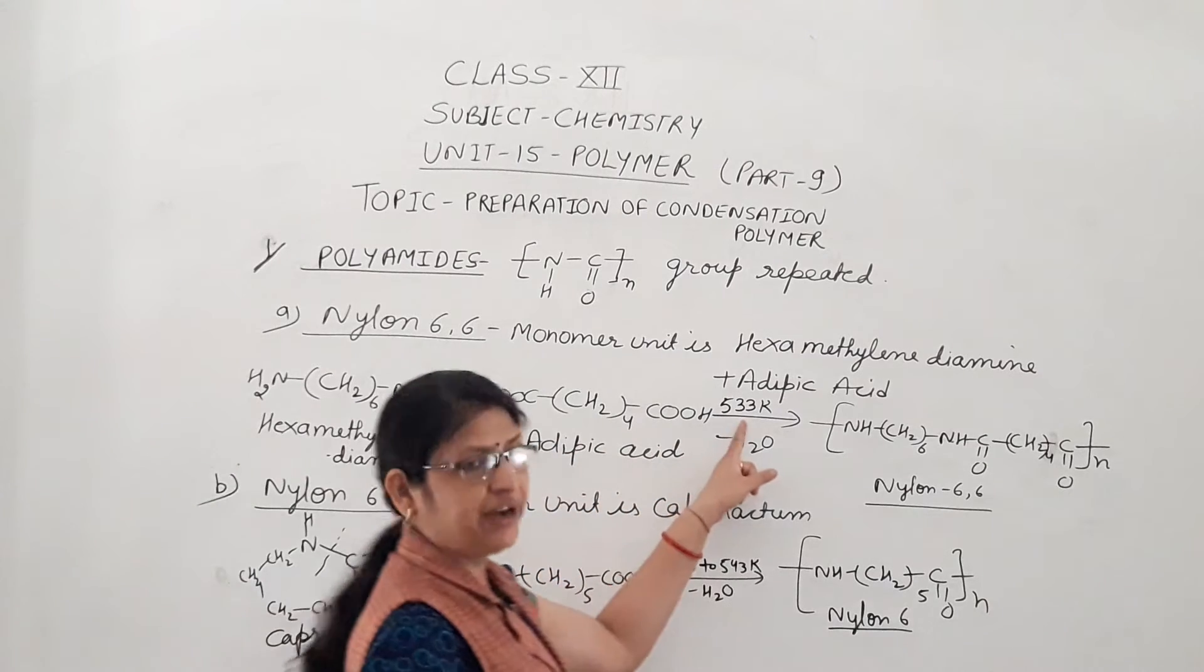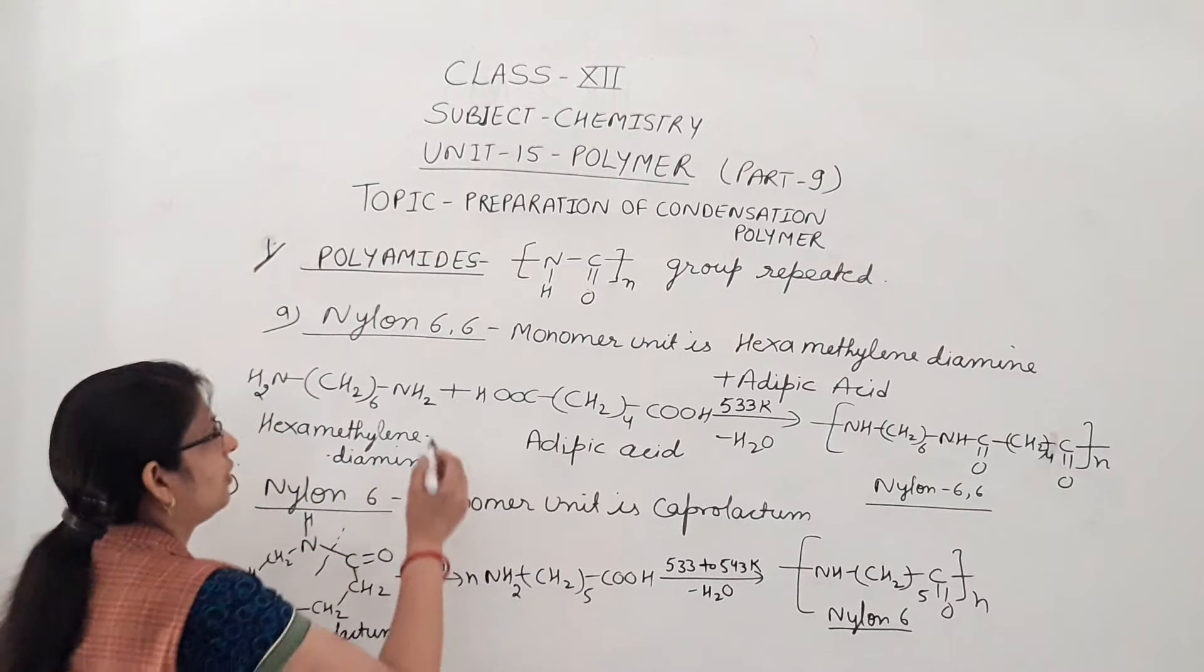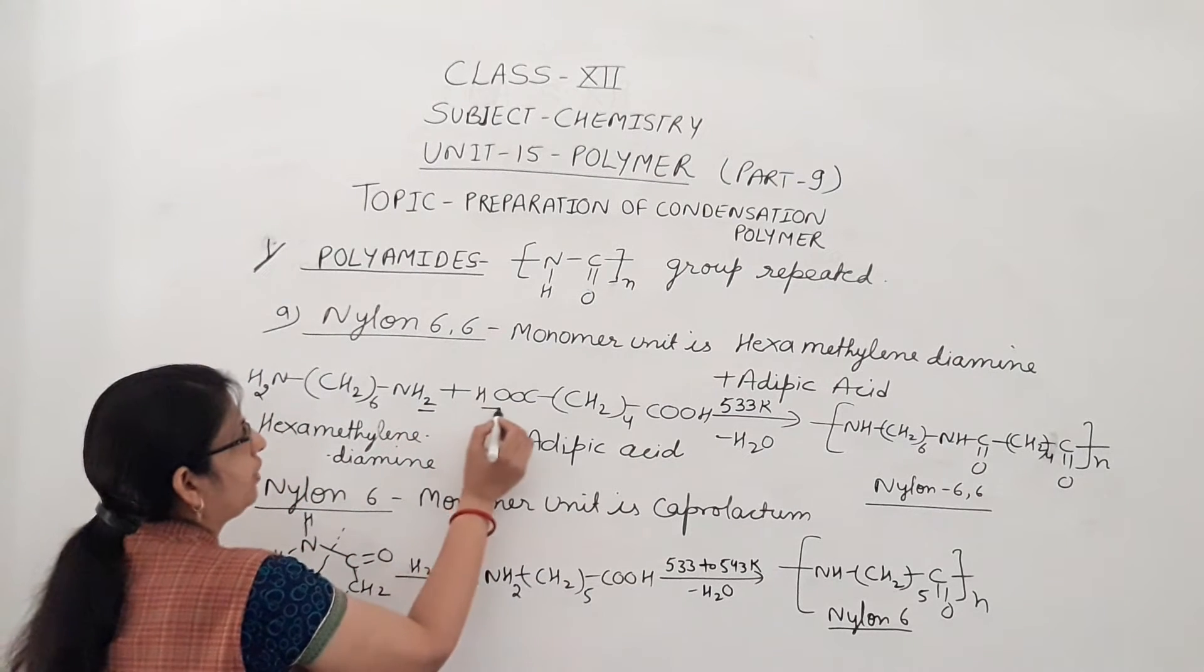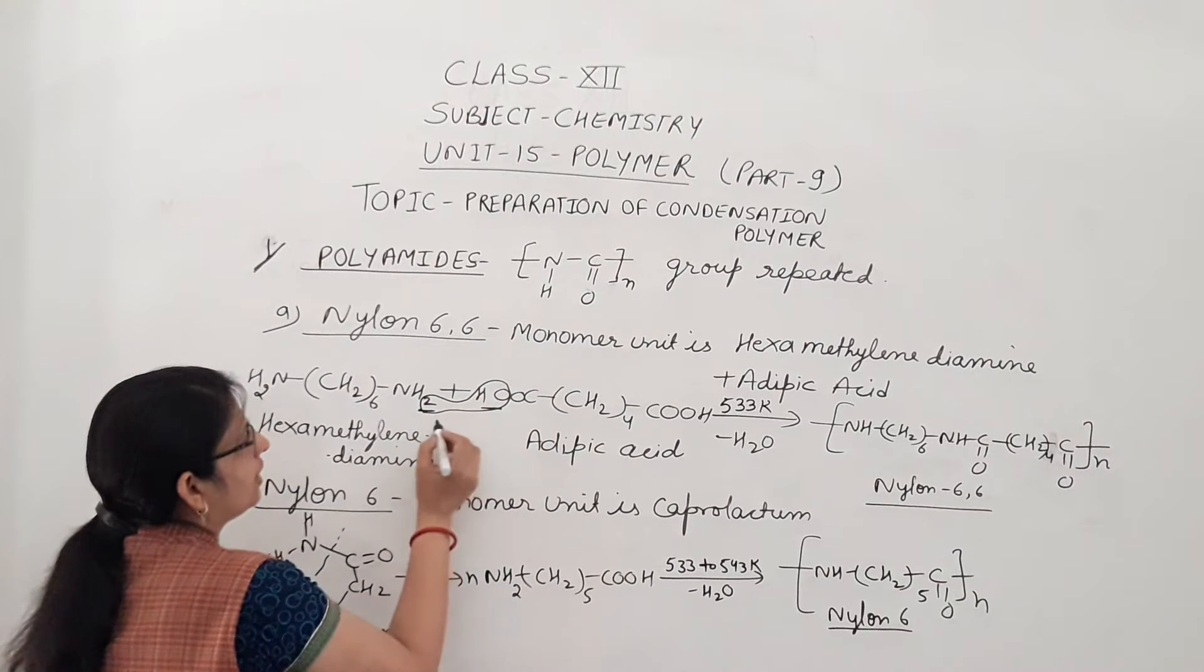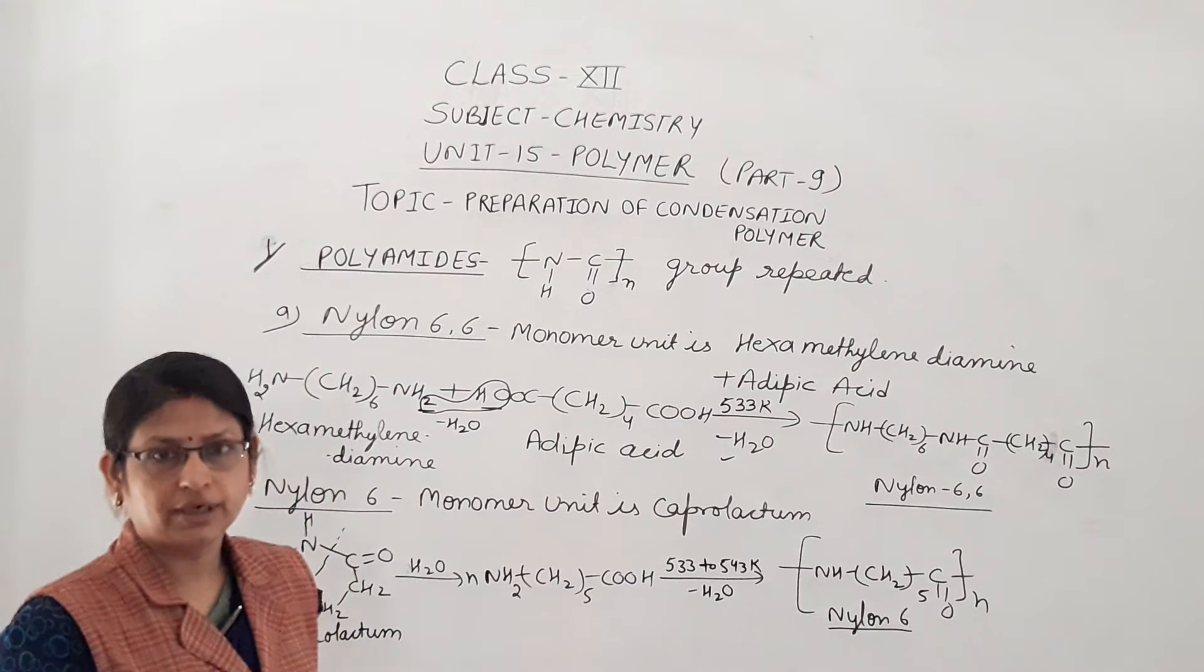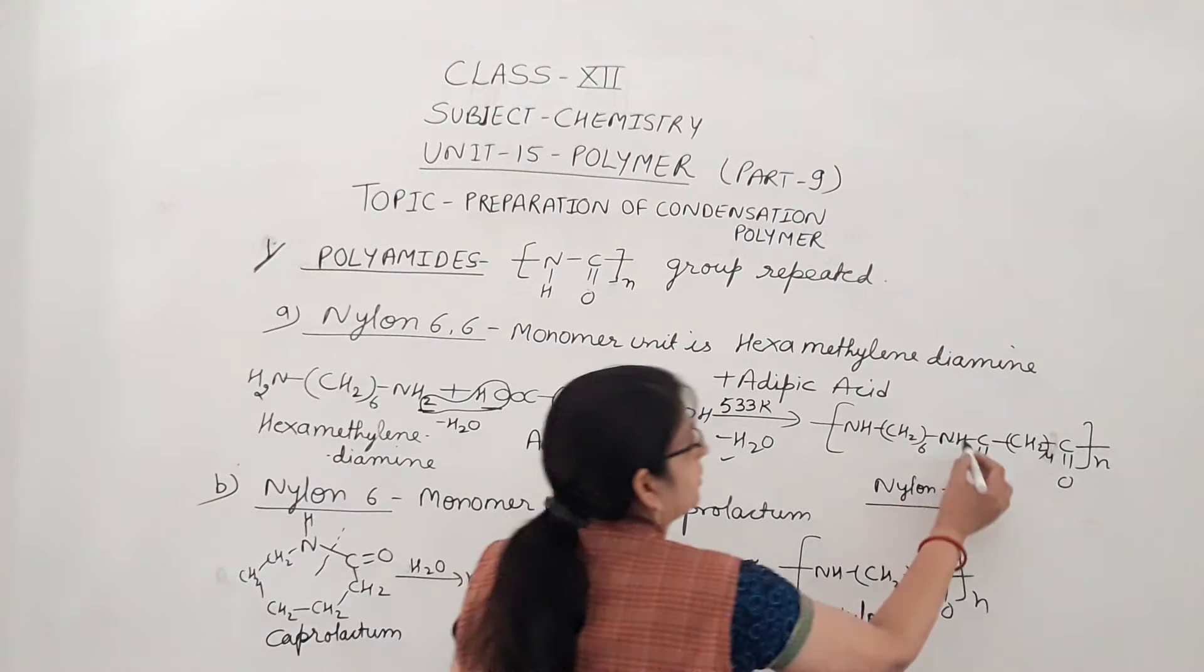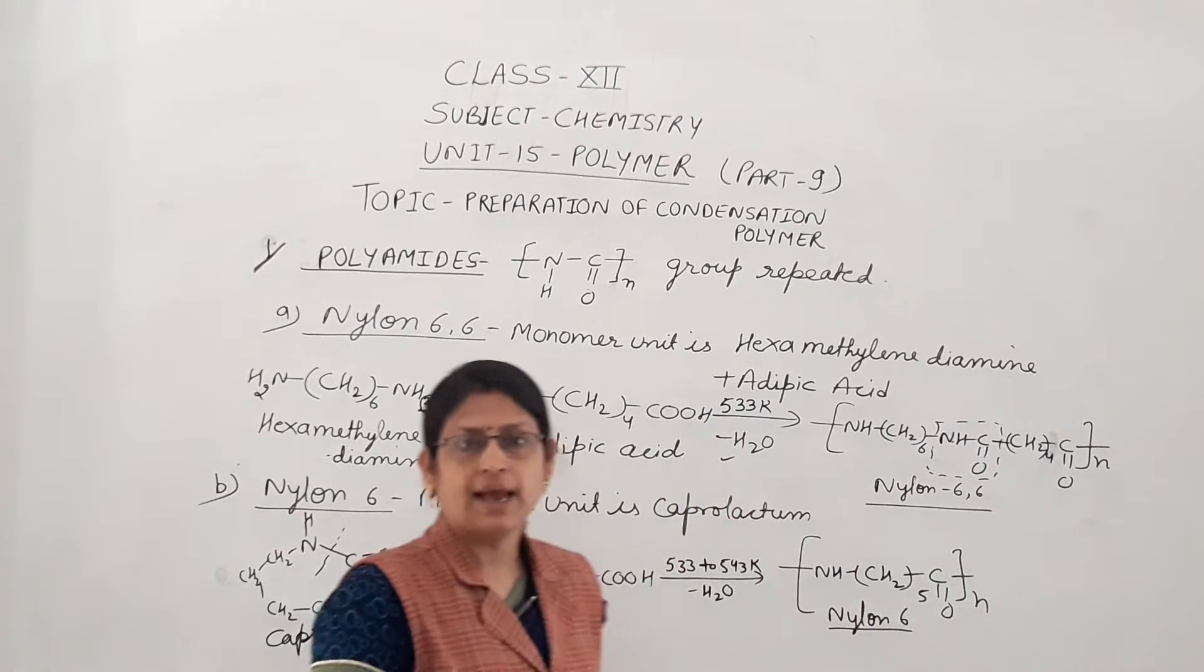So what happened? At 553 Kelvin temperature during polymerization, the water - H and OH - these both combine to each other and water is eliminated. What is eliminated here? Water. So here this group N-H-C=O, that group is known as amido group.